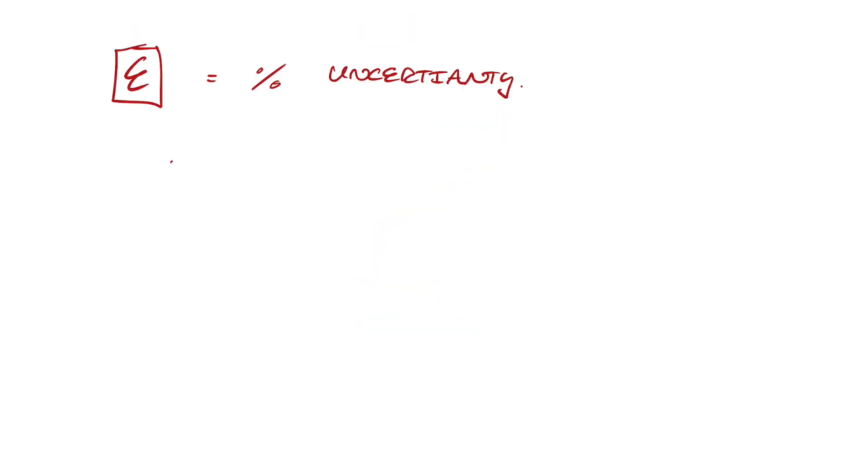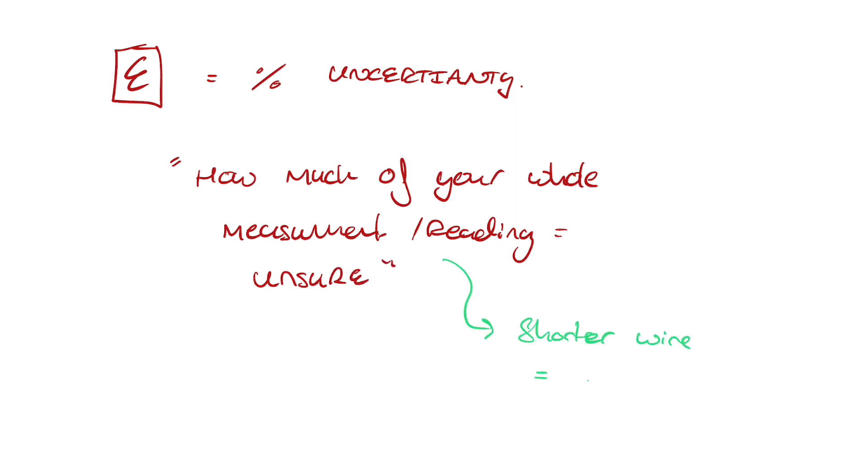Percentage uncertainty, given this symbol, a little fancy E called epsilon, is the percentage of the reading that it could differ by. So, say plus or minus two percent of five. So, that five could be in the ranges of 4.9 to 5.1 again.